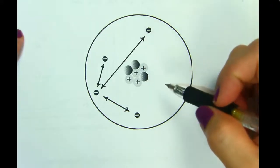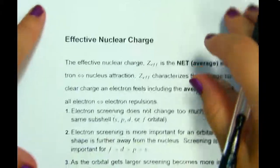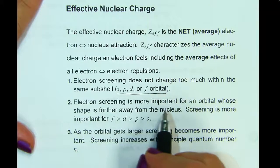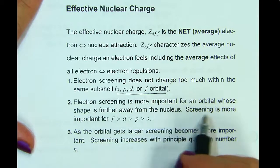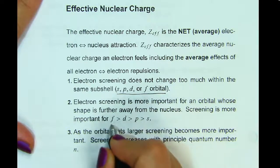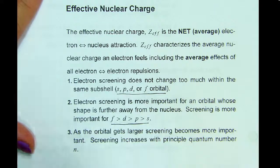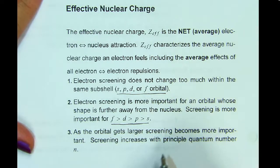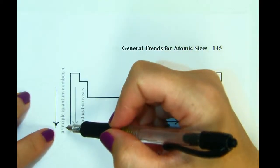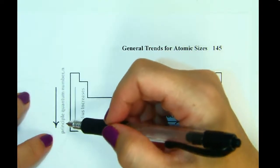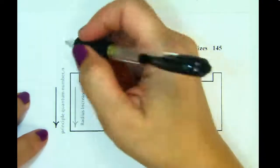Electron screening does not change too much within the same subshell. Screening is more important for orbitals whose shape is further away from the nucleus, so screening is more important for F, then D, then P, then S. As the orbital gets larger, screening becomes more important. Screening increases with principal quantum number n — the greater the n value, the more screening there is.